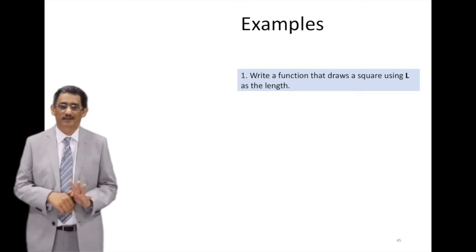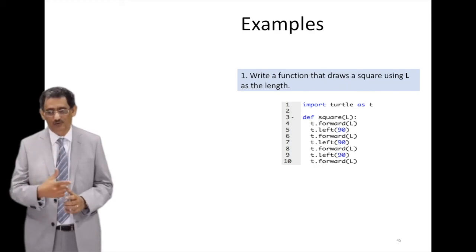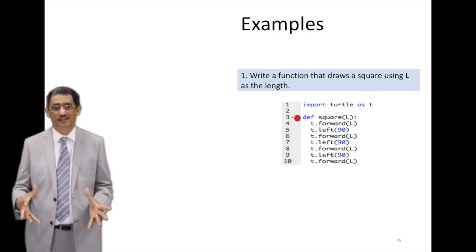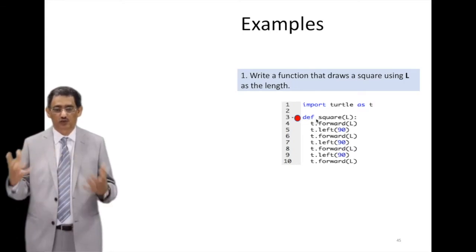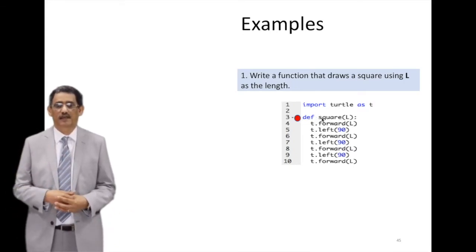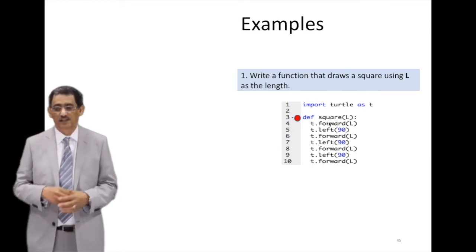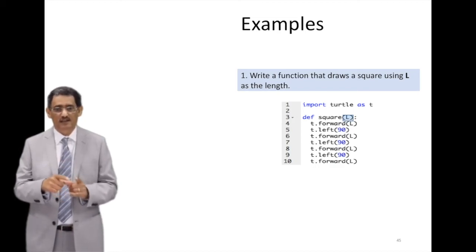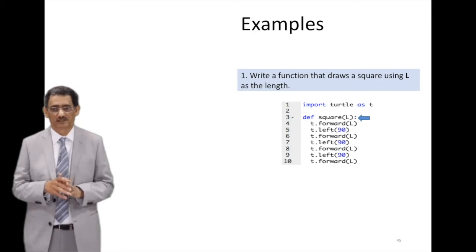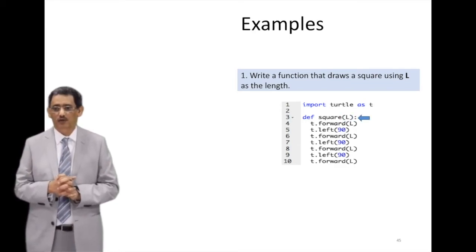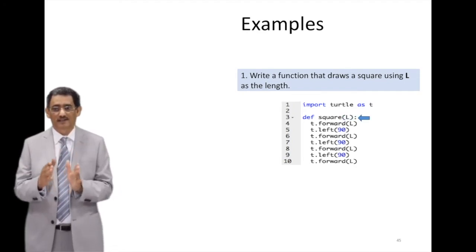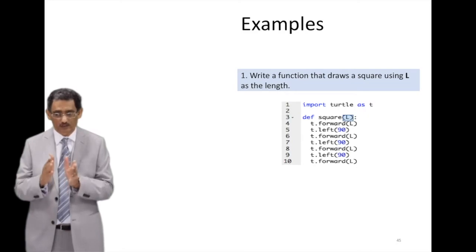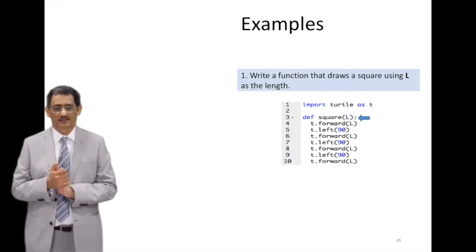Now let's draw a square that receives a parameter called L or variable called L, and the L is the length of that square. So based on that, it draws the square. If you give it 100, it will draw a square with 100. If you give it 200, it will draw a square with 200. So we declare the function here by saying def space square. So the space between def and the name of the function is important. If you don't have space, then it will be considered wrong.